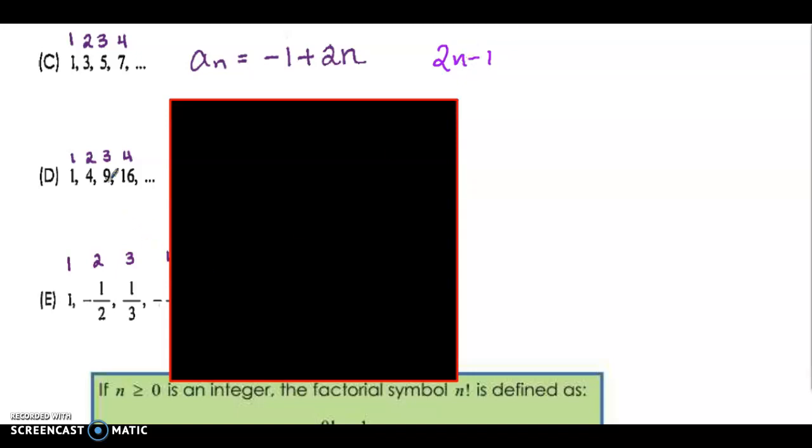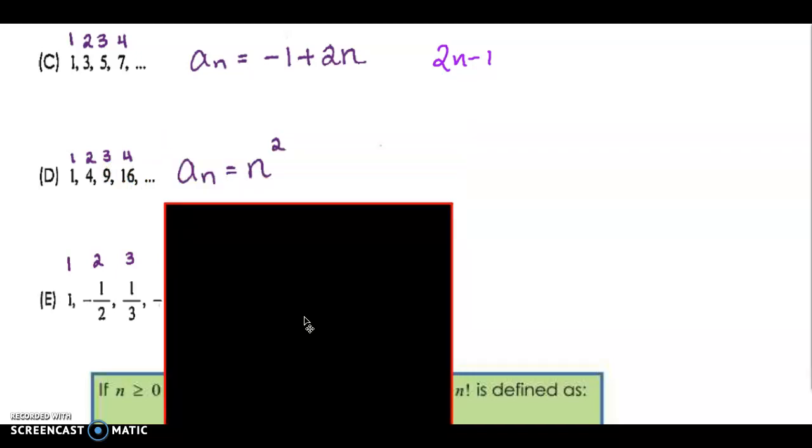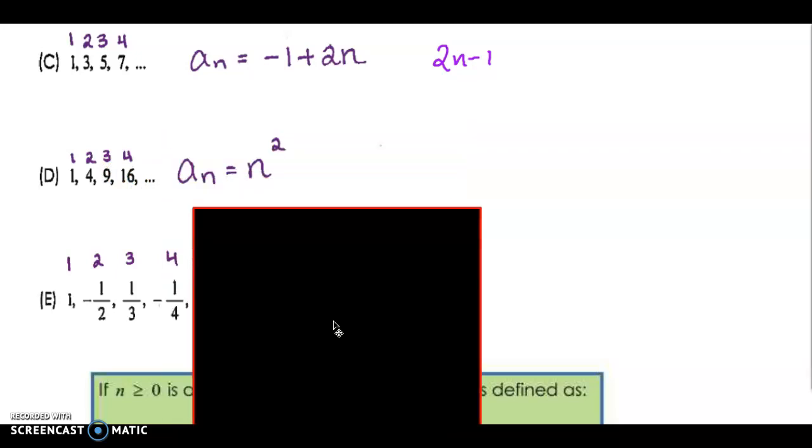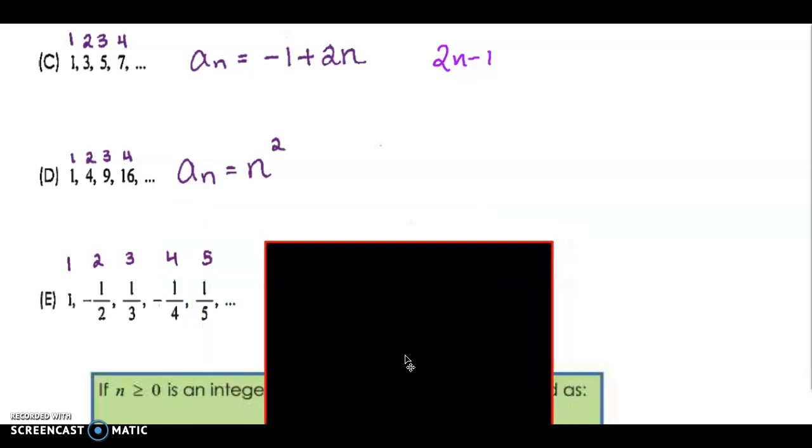All right, the next one is, it's just going to be n squared, so we write that a sub n equals n squared. And then for the last one here, we notice that our denominator is n, and the sign is changing.